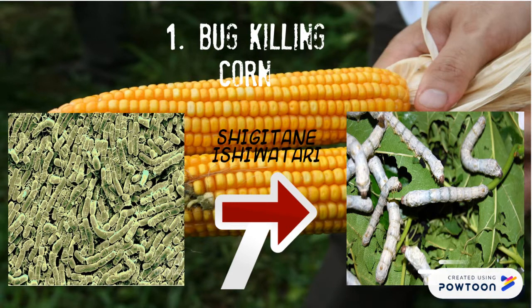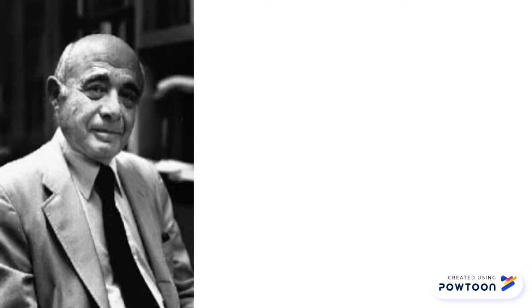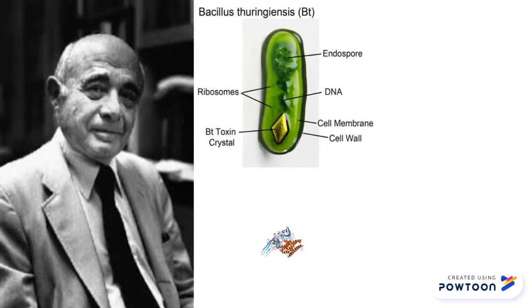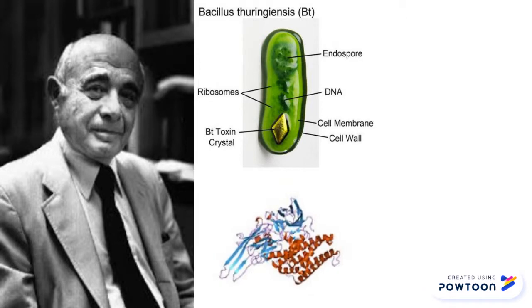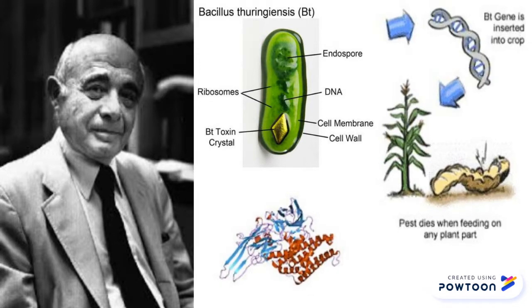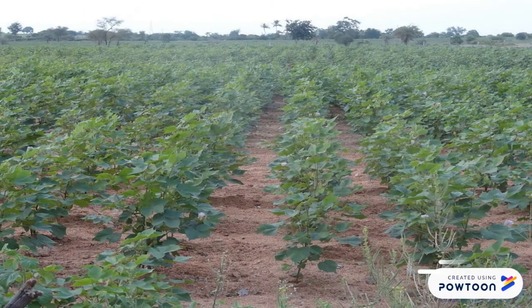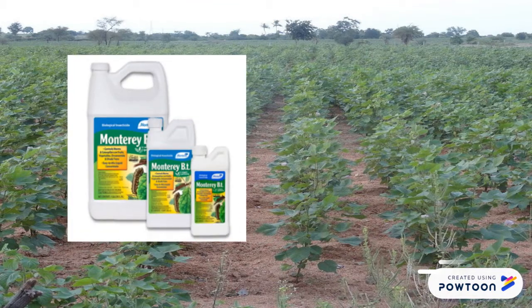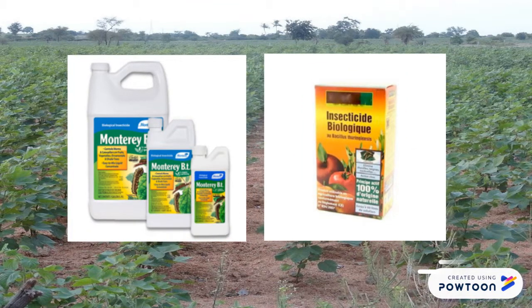Ernst Berliner then rediscovered the bacteria and named it Bt. The delta endotoxin produced by the bacteria is capable of killing Lepidoptera larvae. Bt has been used widely as an alternative to insecticides; moreover, it does not harm other insects, as it is very selective.